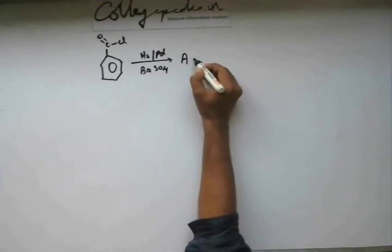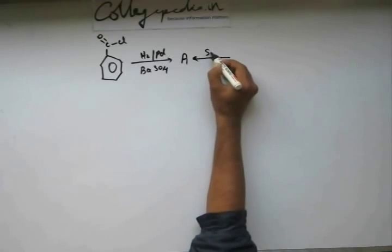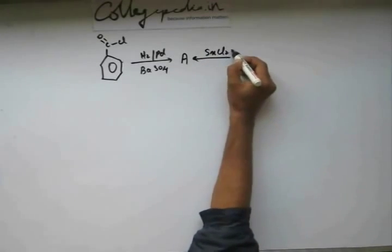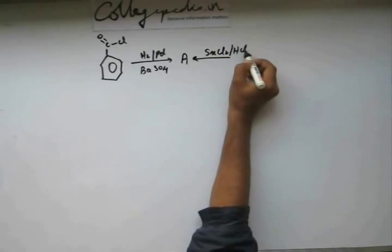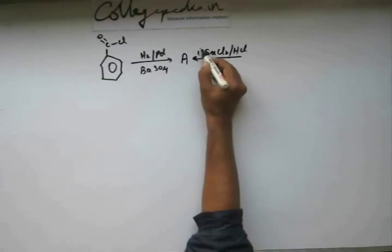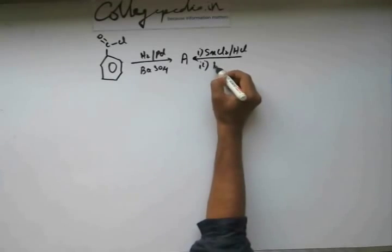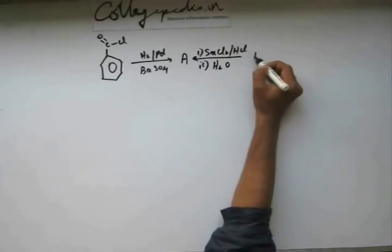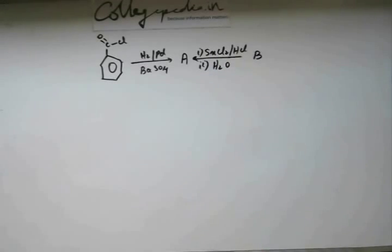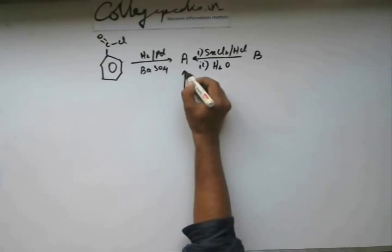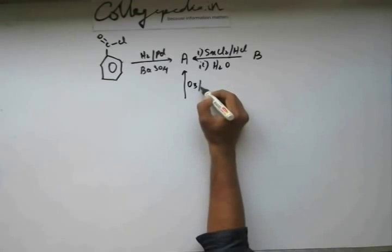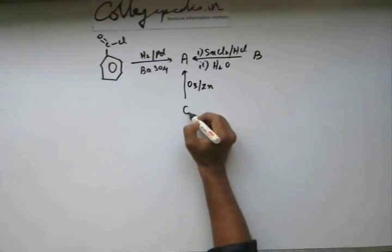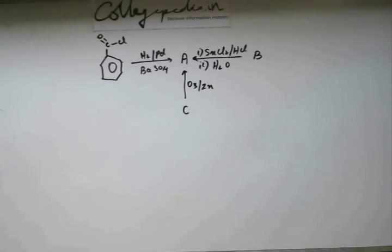I could get A from B as well if I add SnCl2 in presence of HCl and then further hydrolyze the intermediate. That will also fetch me A from B. I could get A even from C by adding ozone and zinc. So you have to find out A, B, and C.